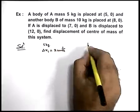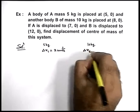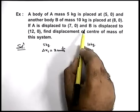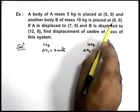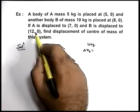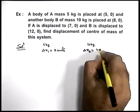Similarly for 10 kg body we can find out delta x-two, the x-direction displacement for the second body B. It is from 8 comma zero to 12 comma zero, so it'll be 4 units.